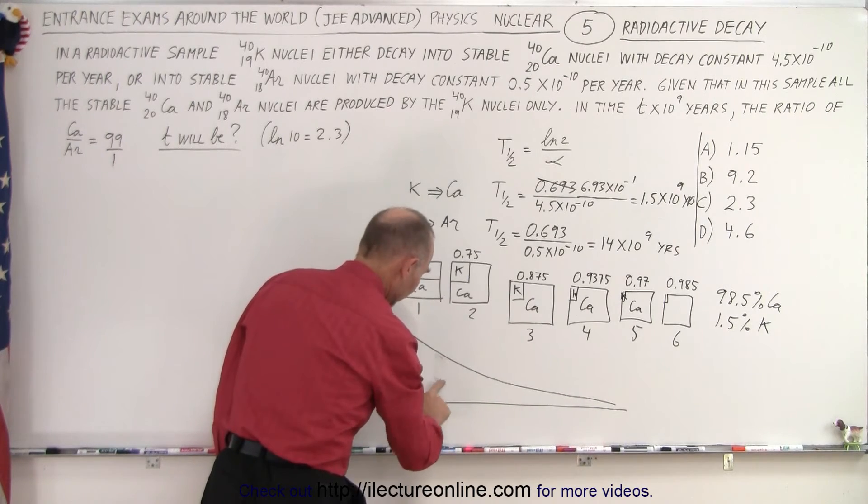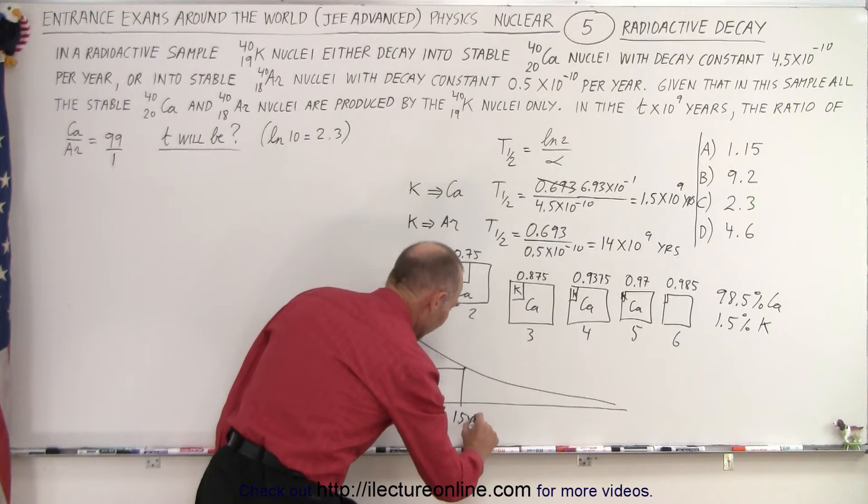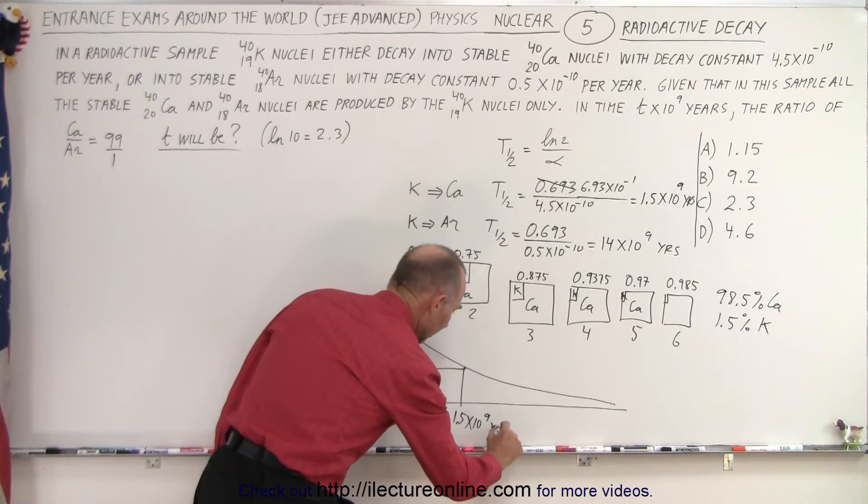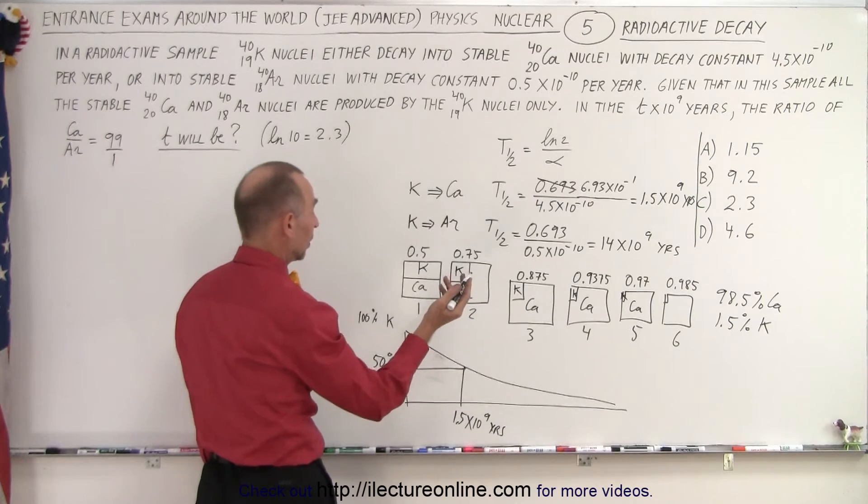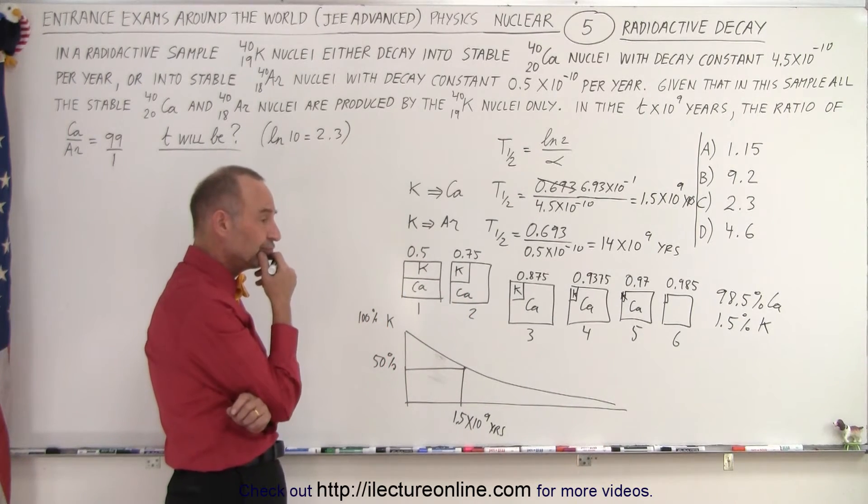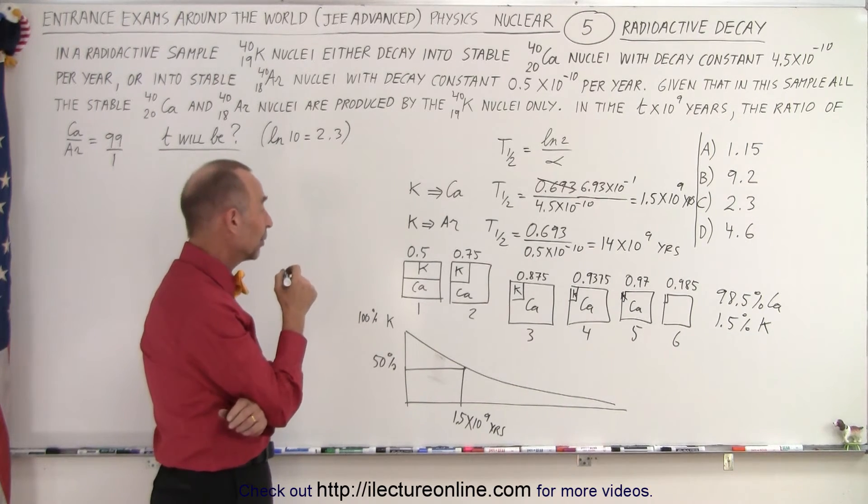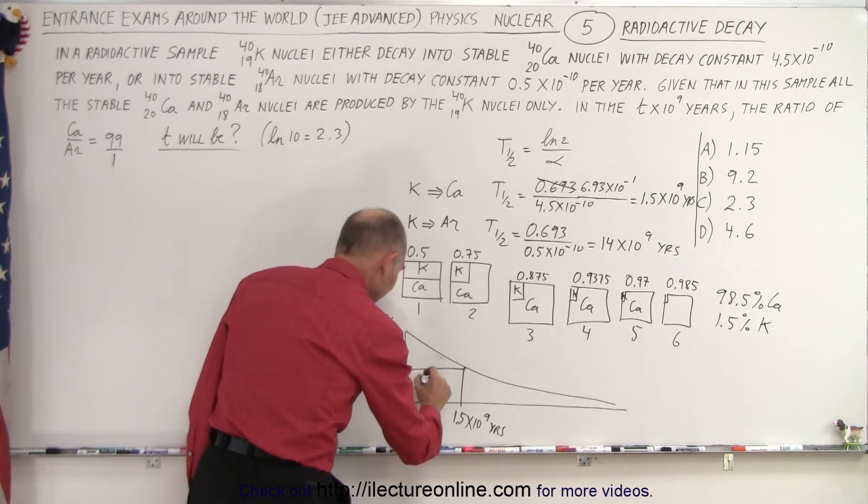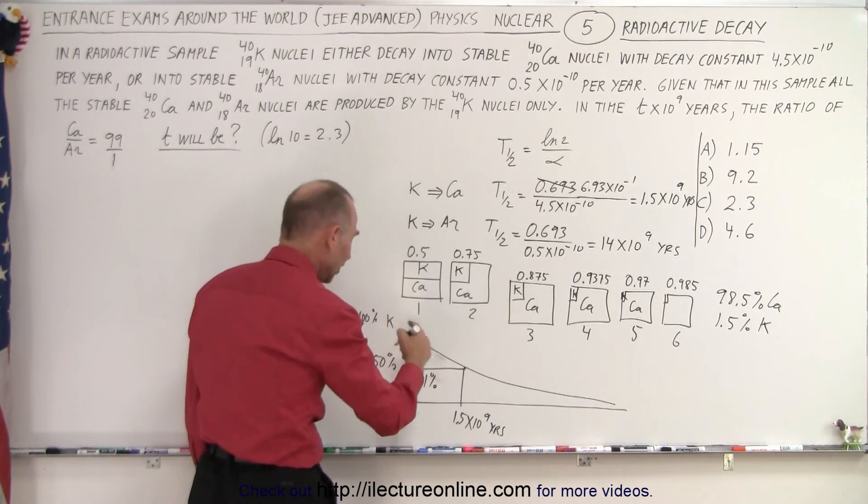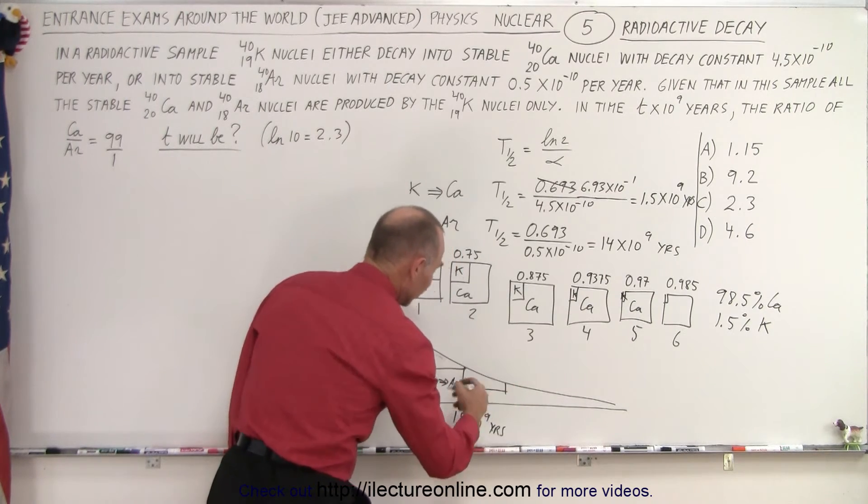Now the question is, how much of that will decay into argon? And that's the real hard part to try and figure that out. So if this is 100% potassium, after about one half-life, we're down to 50% potassium, which happens after 1.5 billion years. During that period of time, only a very small amount of that has actually decayed into argon. How much? Well, 10% of a half-life, that would be a very tiny amount, maybe 1% or less.